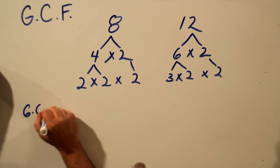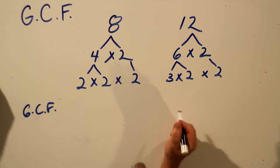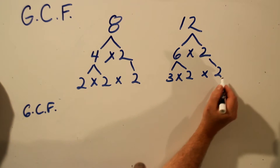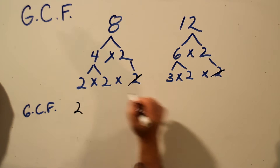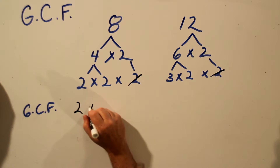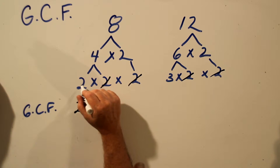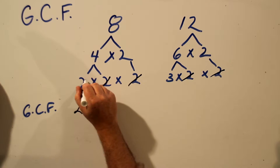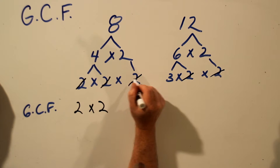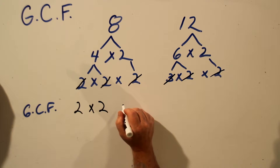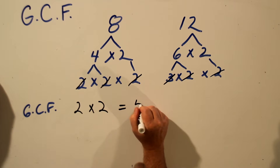To find the greatest common factor, we'll start finding numbers that are in both lists. Here we have a 2, and there's a 2, so we'll use our 2 — cross it off. Here we have another 2, and over here we have another 2, so we'll use another 2 — cross it off. Here we have a 2 but over here no more 2s, so we'll cross that off without using it. And in this list we have a 3, but over here no 3s, so we'll cross off the 3. So the greatest common factor for 8 and 12 is simply 2 times 2, which is 4.